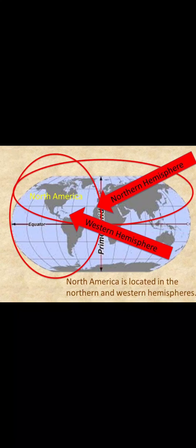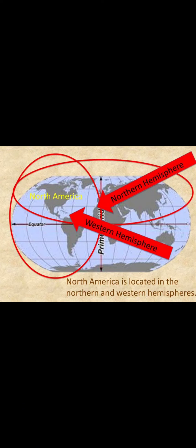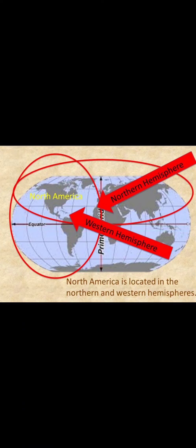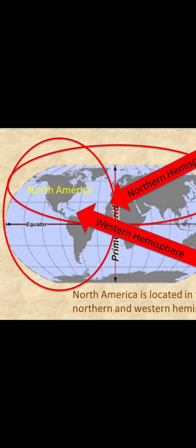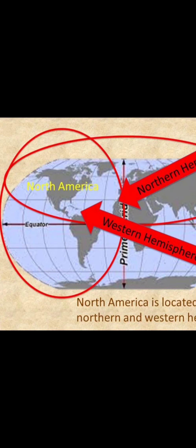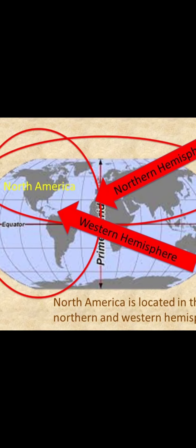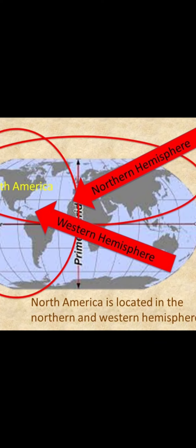As students are aware, the Earth is divided into four hemispheres: the Southern Hemisphere, Northern Hemisphere, Western Hemisphere, and Eastern Hemisphere. As visible from the picture, North America is located in the Northern and Western Hemisphere.